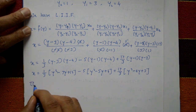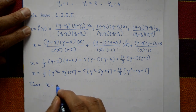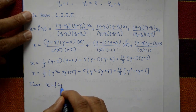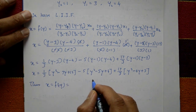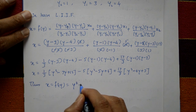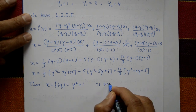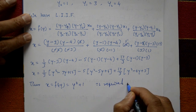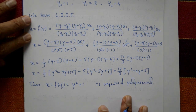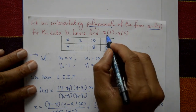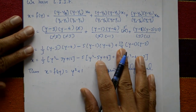Simplifying the right-hand side, we get the final polynomial x = f(y) = y² + 1. This is the required interpolating polynomial.